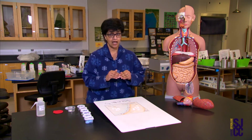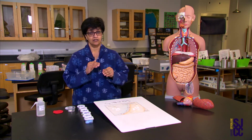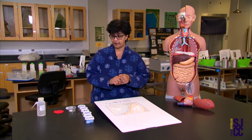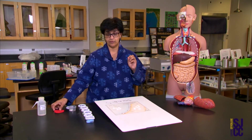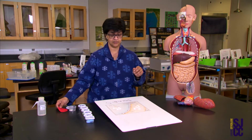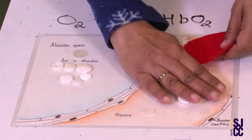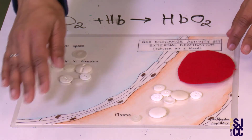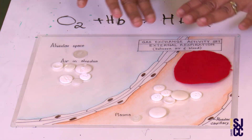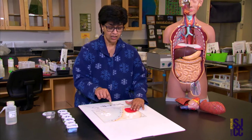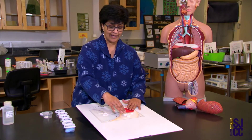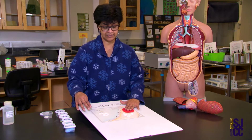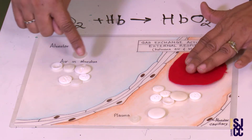But I want to maintain the concentration gradient. That's where the red blood cell and hemoglobin come in. Let's pretend this is a red blood cell — there are many red blood cells, but let's work with one to keep things simple. So I have 8 in the plasma, 0 in the red blood cell, and 8 in the air.